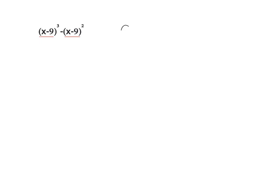In this case, our greatest common factor is a base of x minus 9, and it'll be raised to the smaller of the two powers. The powers that we have are 3 and 2, so the smaller of those two is 2.